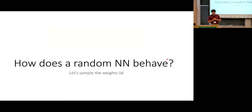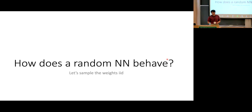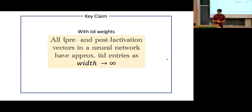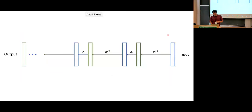Now, we're in a free probability random matrix workshop, so a very natural question to ask is: how does a random neural network behave? By random here, I mean sample the weights in IID fashion. The key claim I'm going to make is that when you sample the weights with IID entries, then all the pre- and post-activation vectors in the neural network will have approximately IID entries as the width goes to infinity.